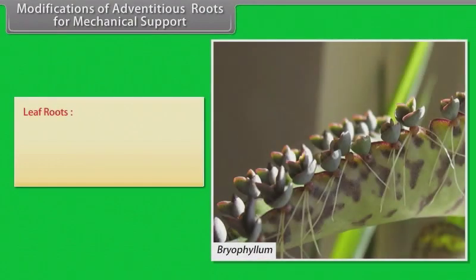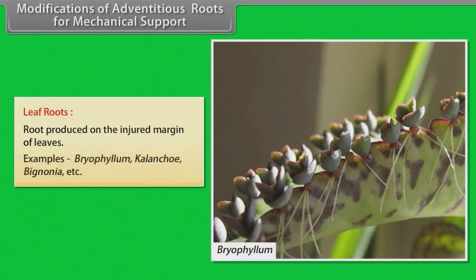Leaf roots: Roots produced on the injured margin of leaves. Examples: Bryophyllum, Bignonia, etc.